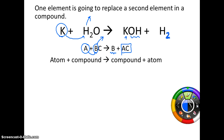For a single replacement, your telling sign is going to be an atom or an element plus a compound yielding a compound plus an atom. So you're going to look for something single by itself plus a compound, yielding a compound plus something single by itself.